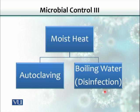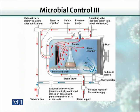Moist heat methods include autoclaving and boiling. When we have a liquid medium, we can simply boil it, but boiling does not eliminate spores — so boiling is essentially a disinfection method, not sterilization. By autoclaving, however, we achieve complete sterilization.